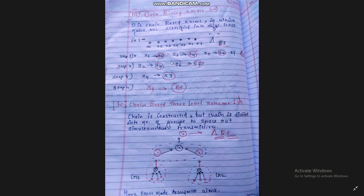In the second step, S2 has data, S4 and S6 have data. S2 sends its data to S4, and S6 sends data to S7. S4 now carries the data of S1, S2, and S3, while S7 carries the data of S5 and S6. In the next step, S4 submits its data to S7. Finally, S7 submits all the data directly to the base station. So all the nodes form levels to submit their data.